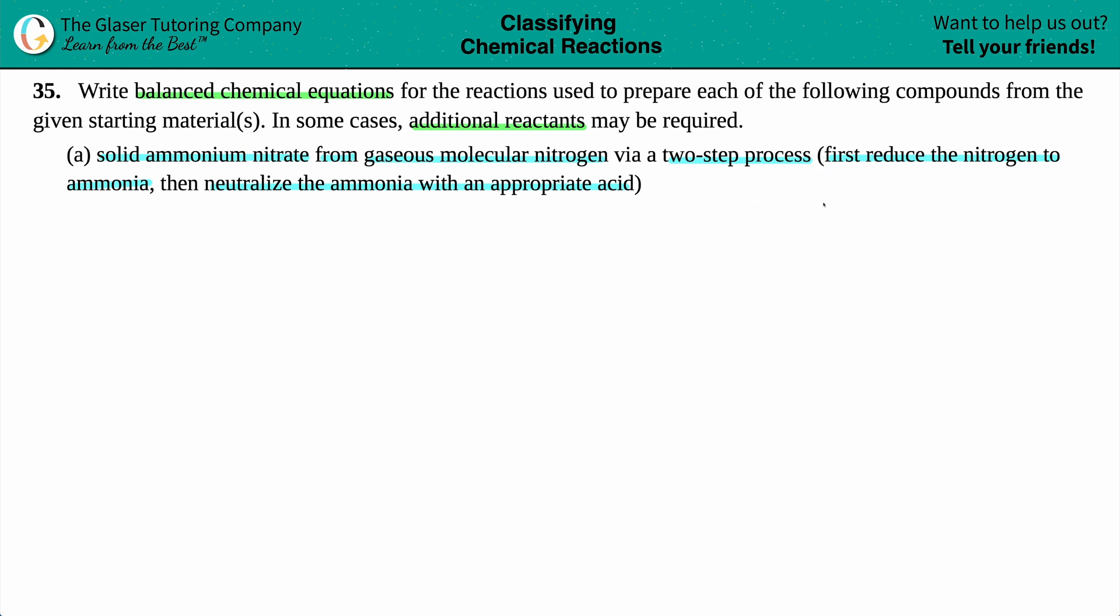Letter A says that solid ammonium nitrate from gaseous molecular nitrogen via a two-step process. We need to first reduce the nitrogen to ammonia and then neutralize the ammonia with an appropriate acid. So it seems like we have to do two steps here. They are specifically telling us that number one, the first one, we have to reduce the nitrogen to ammonia.